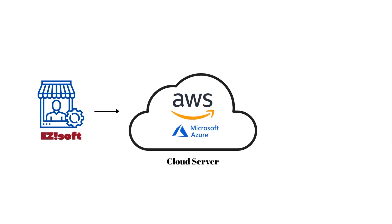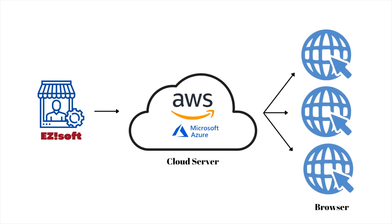Imagine that you outsourced the creation and maintenance of the online bookstore to an external vendor — let's call them EasySoft. EasySoft created the bookstore as an online app and then deployed — or in simple words, installed — the app on a cloud service like Microsoft Azure or Amazon Web Services, popularly known as AWS. Once deployed, the customers of your online bookstore could access it online through their web browsers.